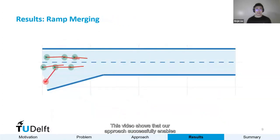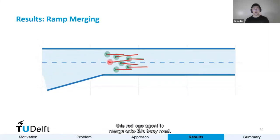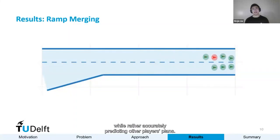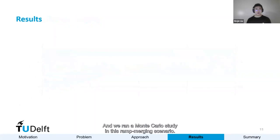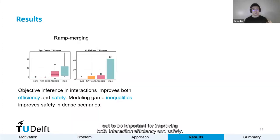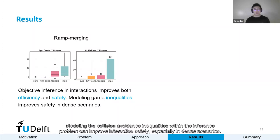This video shows that our approach successfully enables this red ego agent to merge onto this basic road while accurately predicting other players' plans. We ran a Monte Carlo study in this ramp-merging scenario, and compared with other baselines, we found that objective inference turns out to be important for improved interaction efficiency and safety. Modeling the collision avoidance inequalities within the inference problem can improve interaction safety, especially in dense scenarios.